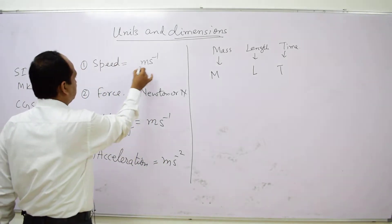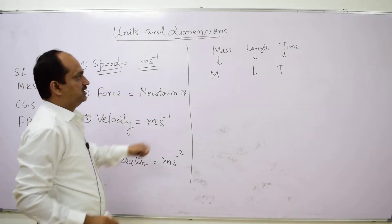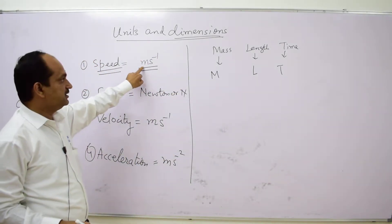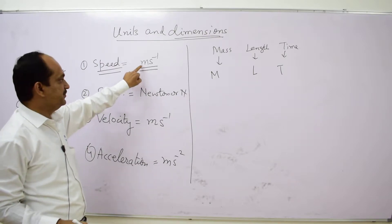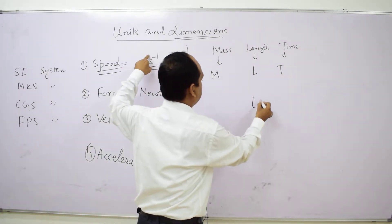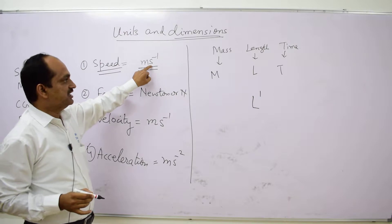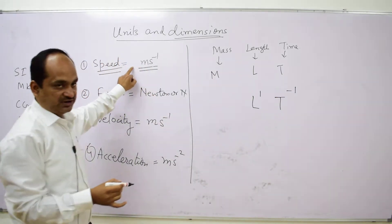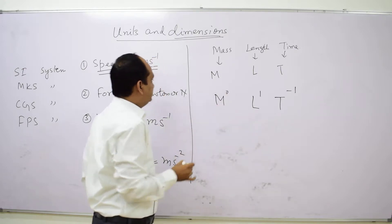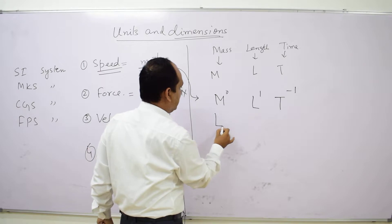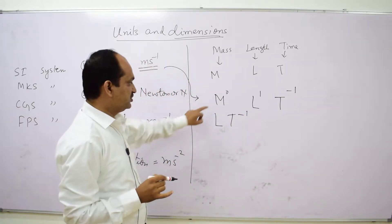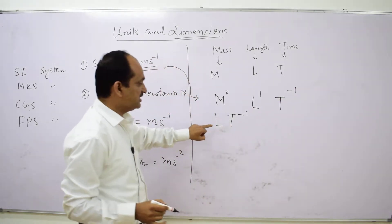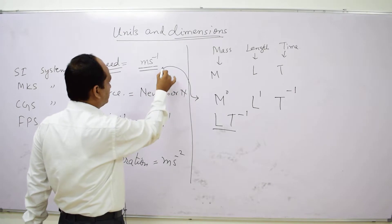If we have to write the unit of speed in terms of dimensions M, L, T — the unit is meter per second. Meter means length, so we write L to the power 1. Second corresponds to time T, so we write T to the power minus 1. Mass is not present, so the dimensional formula for speed is L T minus 1.